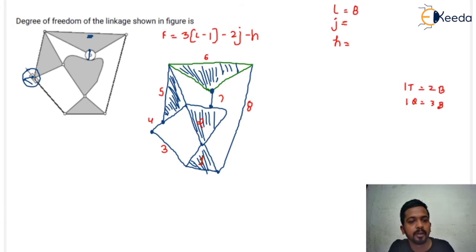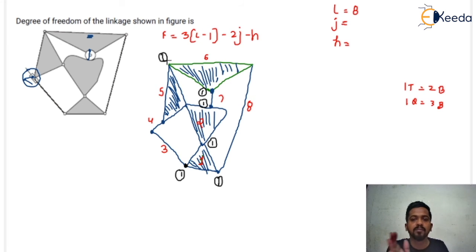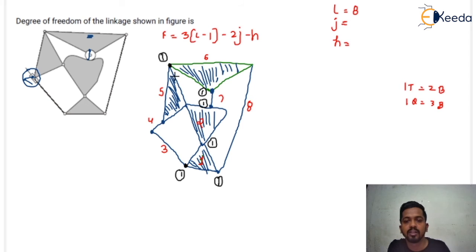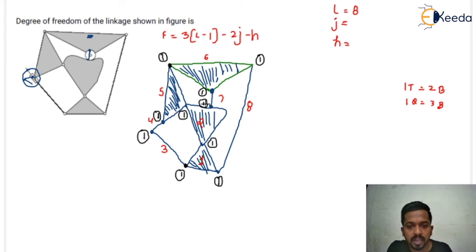We will calculate the number of binary joints. That is one binary joint because it is connecting one link and the third link. That is another binary joint, that is another, and that is also a binary joint, this is also binary joint, and this is also binary joint. Be careful when you count the number of joints because confusion will arise for ternary or quaternary joints. This is a binary joint because it is connecting the sixth link and the fifth link — this is not a quaternary joint because the shaded portion is considered as one link. This is binary joint, and this is binary joint, and this is also one binary, and this is also binary. Counting: one, two, three, four, five, six, seven, eight, nine, ten. So there are ten binary joints.